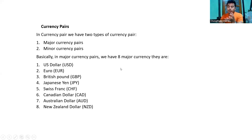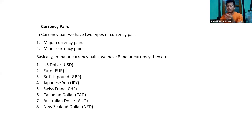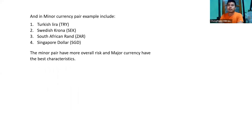Currencies are categorized as major currency pairs and minor currency pairs. Major currencies include USD, EUR, British pound, Japanese yen, Swiss franc, and Canadian dollar. Let me show you some examples about minor currencies as well.